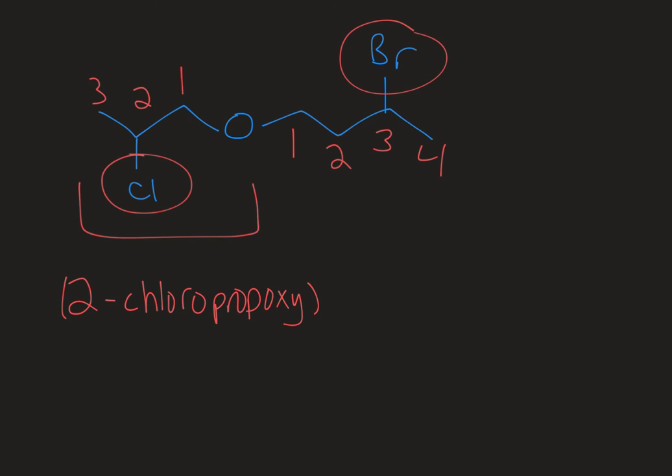The other substituent is a bromo group, and B comes before C in the alphabet, so this would be first alphabetically. So you would have 3-bromo, and then here's where you use your parentheses.